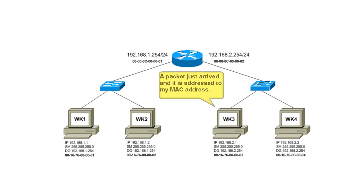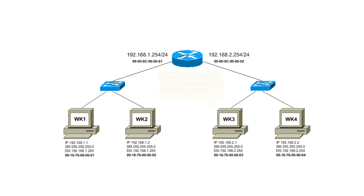Once Workstation 3 receives the packet, it verifies the MAC address in the packet, and since it matches its network interface MAC, it brings the packet into the operating system for processing. For Workstation 3 to communicate back to Workstation 1, the process must happen once again but in reverse. In summary, for packets to be delivered on a local network, both layer 2 and layer 3 addressing is required.